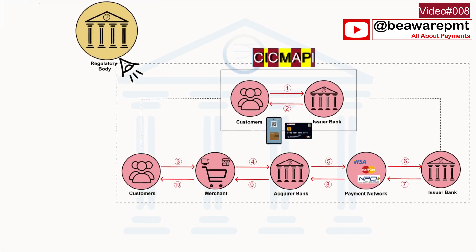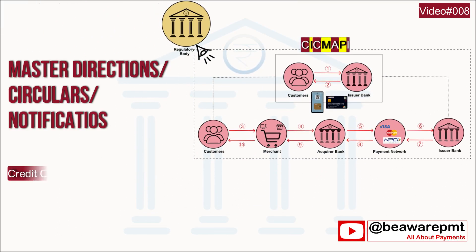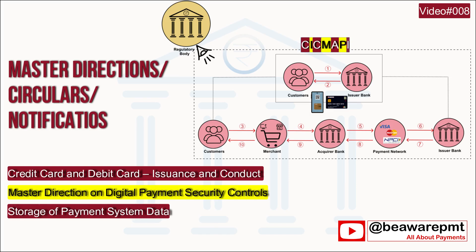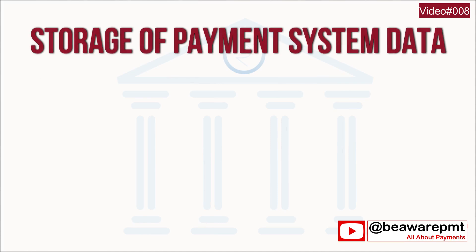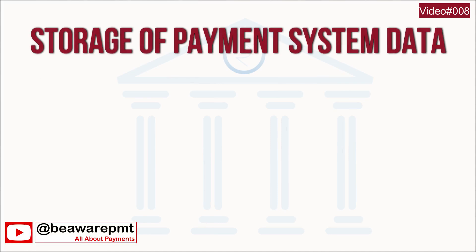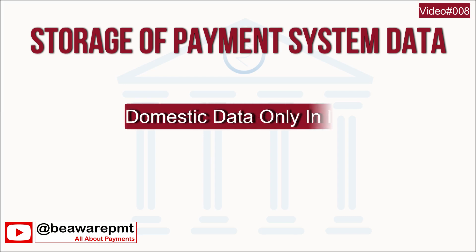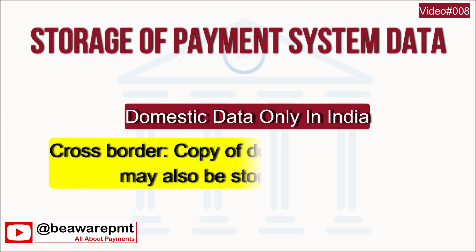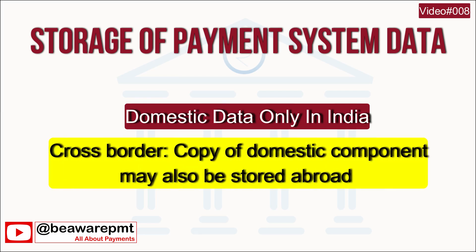All payment systems in India must comply with master directions, circulars, or notifications issued by RBI. For example, regarding storage of payment system data: the entire data relating to payment systems must be stored in a system only in India. This data should include the full end-to-end transaction details, information collected, carried, and processed as part of the messages or payment instruction.